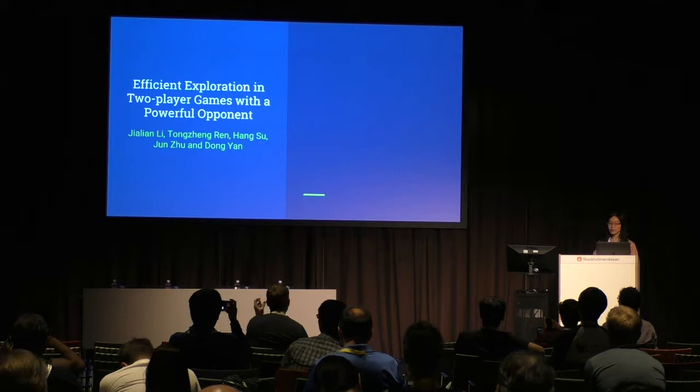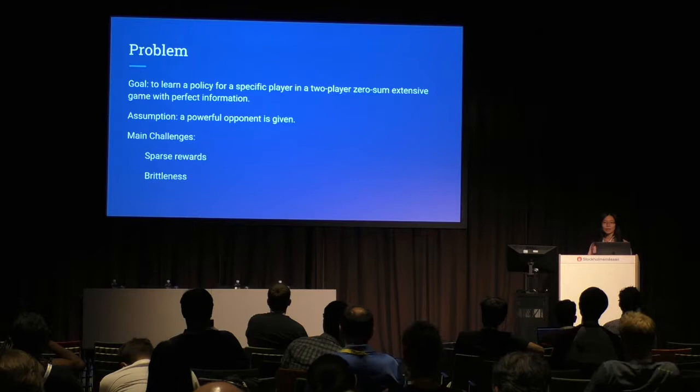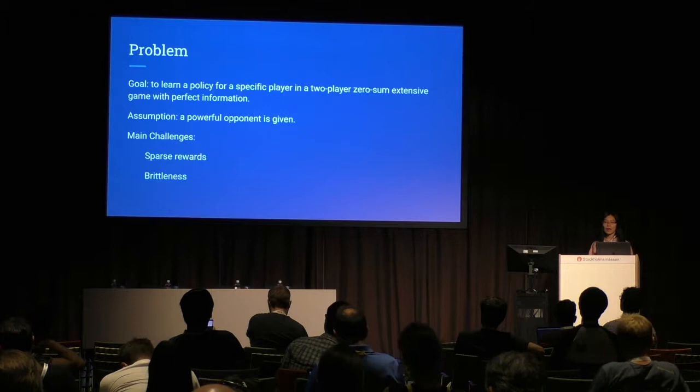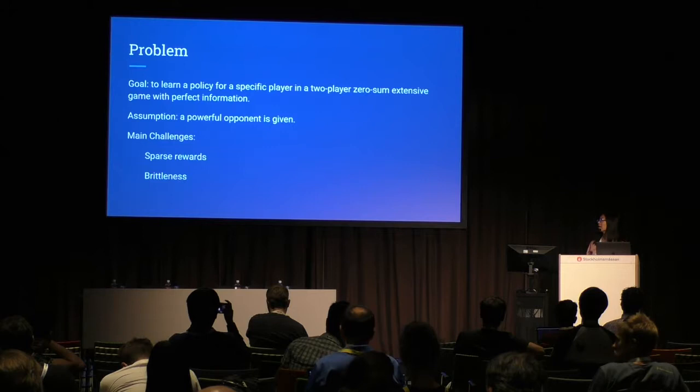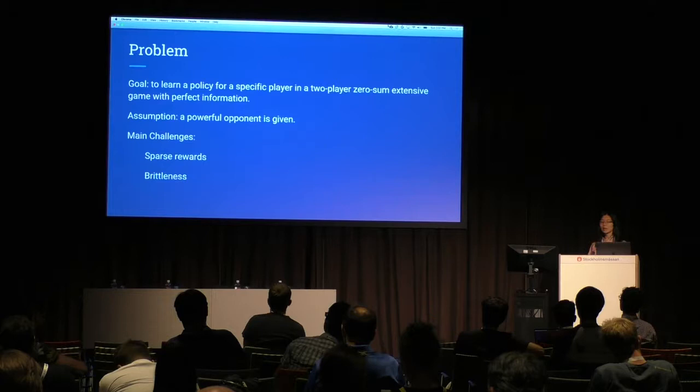Hello, everyone. Our goal is to learn a policy for a specific player in a two-player, zero-sum, extensive game with perfect information. Our basic assumption is that a powerful opponent is given and we can play with it repeatedly. Our intuitive insight is that a powerful opponent has knowledge about its own policy space, which we can use to guide our agent to explore efficiently in our own policy space. There are two main challenges in this paradigm.